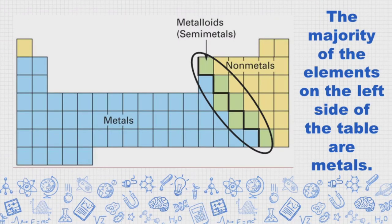A stair-step line separates metals and non-metals. The majority of the elements on the left side of the table are metals.